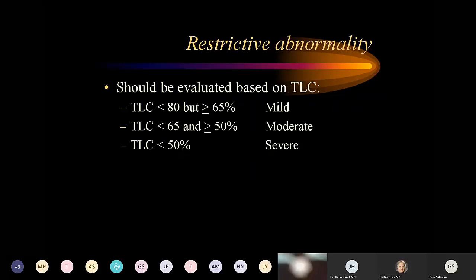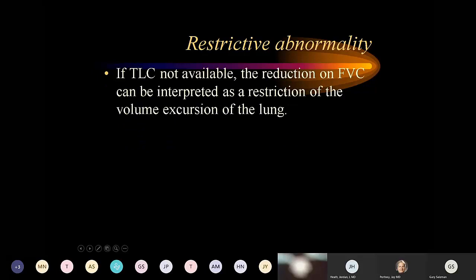For restriction, we must measure total lung capacity — this requires more than just spirometry; we need to measure lung volumes. Severity levels for restriction based on total lung capacity: mild is 65 to 80%, moderate is 50 to 65%, and severe is less than 50%. If only spirometry is available, forced vital capacity can suggest severity, but measuring TLC is the recommended approach for restrictive lung disease.